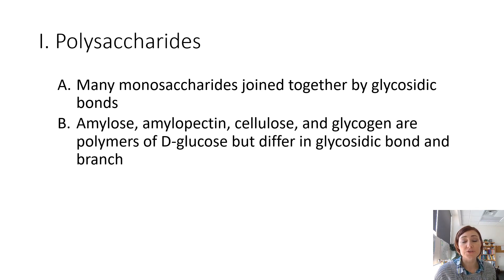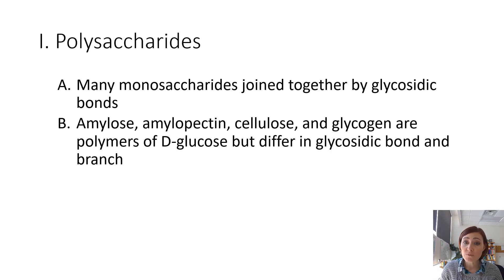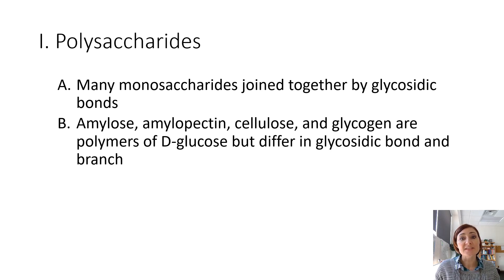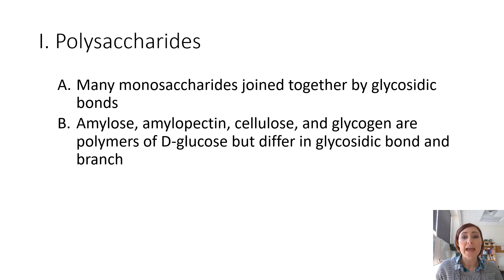The four polysaccharides we're going to focus on are amylose, amylopectin, cellulose, and glycogen. They're all polymers of D-glucose. The difference between them is how we connect the monomers of D-glucose — what those glycosidic linkages look like, what carbons are involved, and whether they have branches in the structure.